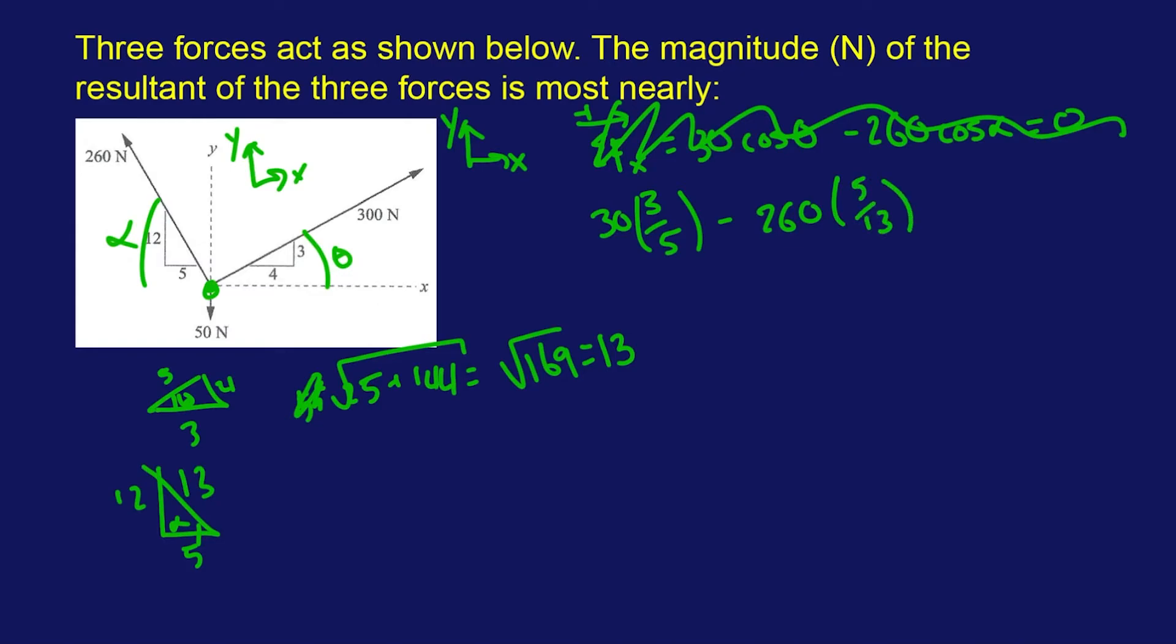So, this is going to be the sum of the forces in the x direction. We'll call this fx, and then we'll sum the forces in the y direction. That's going to be sort of the easy one, negative 50, easy clap, plus 300 sine of theta, which is opposite over hypotenuse, which is 4 fifths.